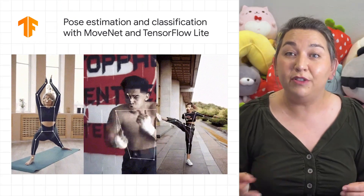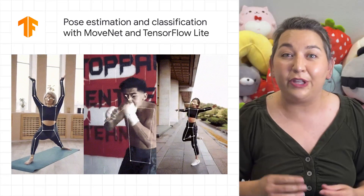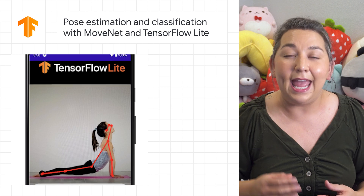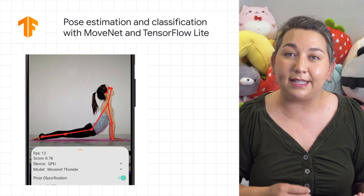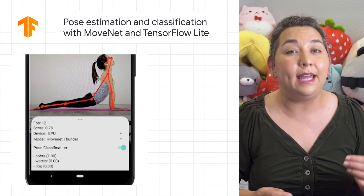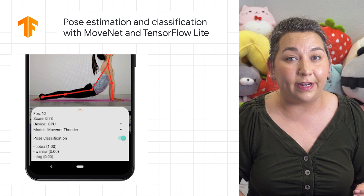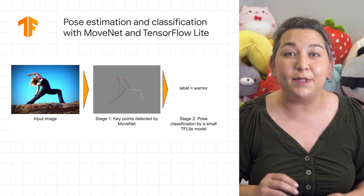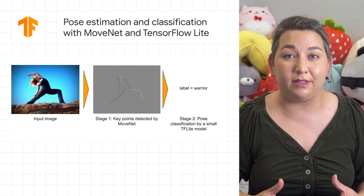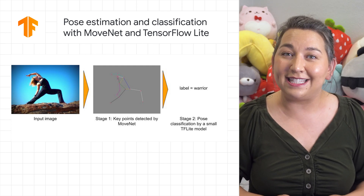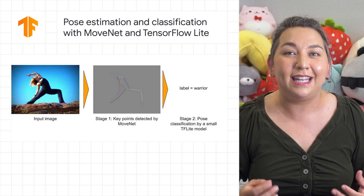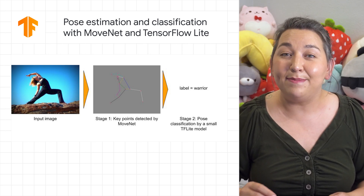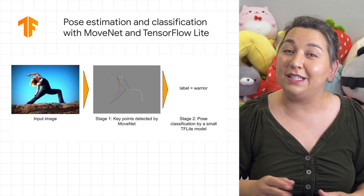The TensorFlow Lite version of MoveNet is now available on TensorFlow Hub. This includes an update to improve the accuracy and makes it compatible with hardware accelerators, including GPUs and other accelerators available via the Android Neural Network API. This provides support for Pose Estimation, which is a machine learning task that estimates the pose of a person in an image or video. For more on the latest updates and a deep dive on Pose Estimation, go to the link in the description.